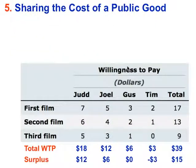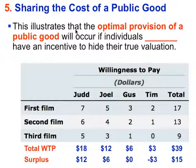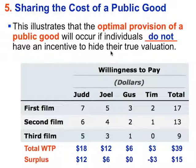The last question illustrates that optimal provision of a public good will occur if individuals do not have an incentive to hide their true valuation. When the cost is paid based on willingness to pay, people do have an incentive to hide their true valuation and the public good doesn't get provided even when it should. But when what you pay is not impacted by what you report, there's no incentive to hide your true valuation — and then we can have optimal provision of a public good.